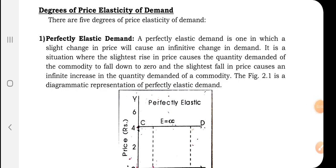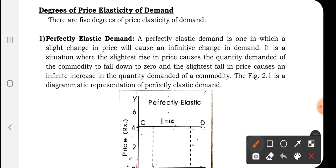The first degree is perfectly elastic demand. A slight change in price produces an infinite change in demand, which is written as E equals infinity. A slight rise in price may make the quantity demanded fall down to zero, or a slight fall in price may produce an infinite rise in the quantity demanded.